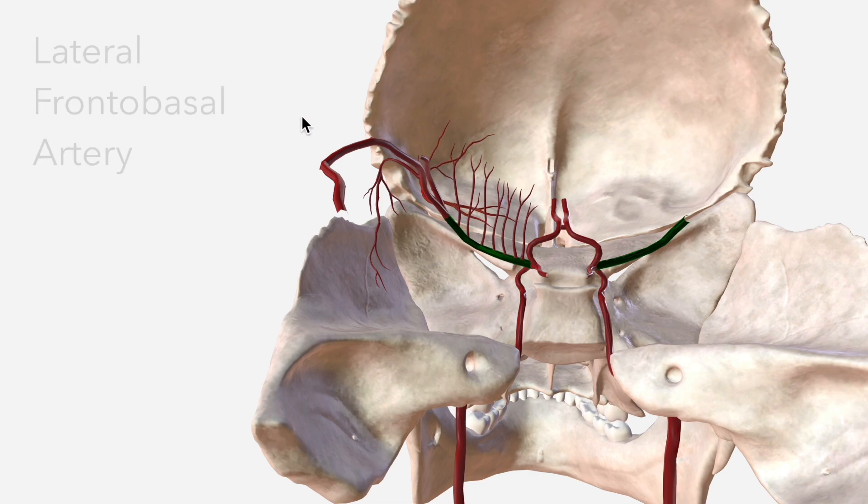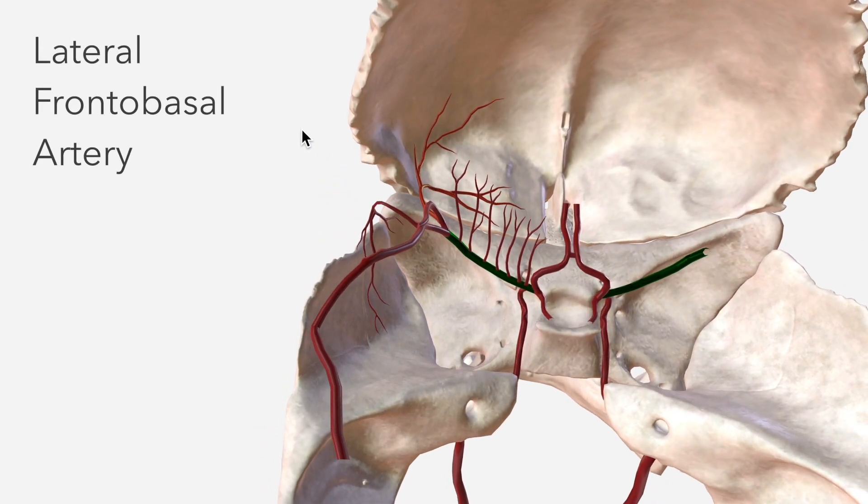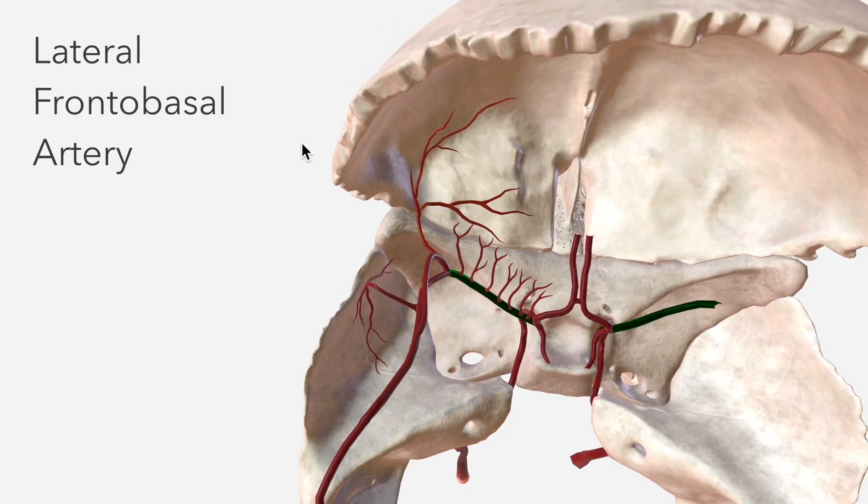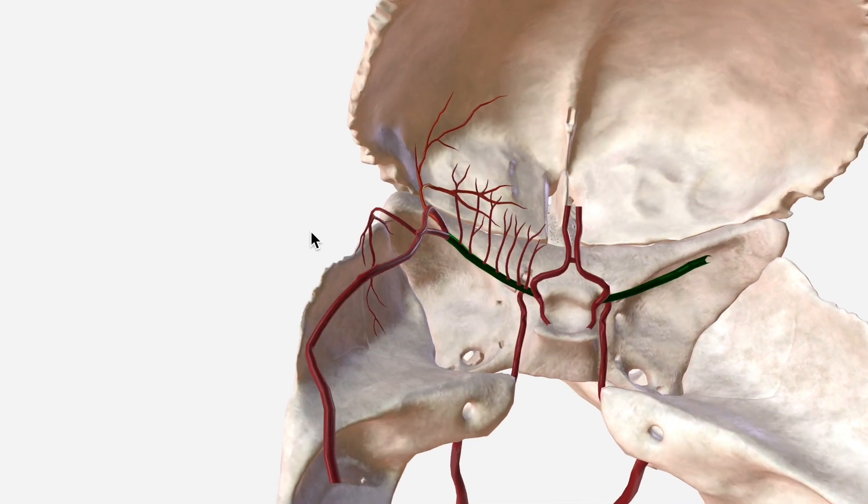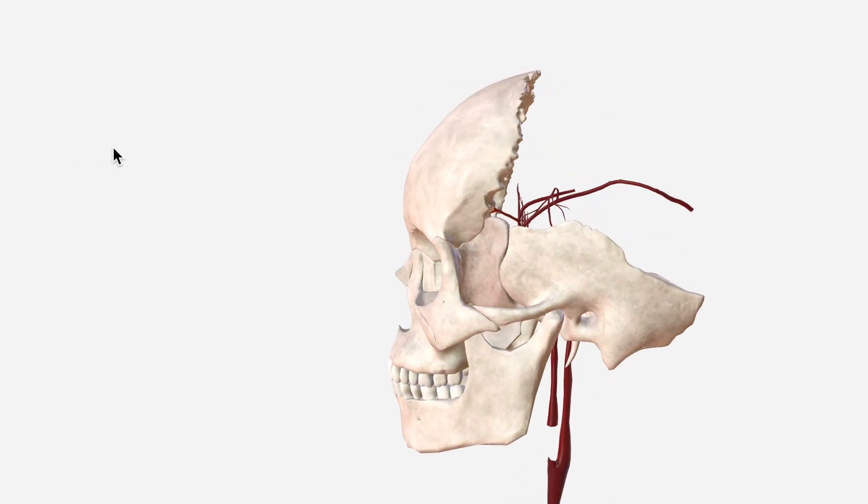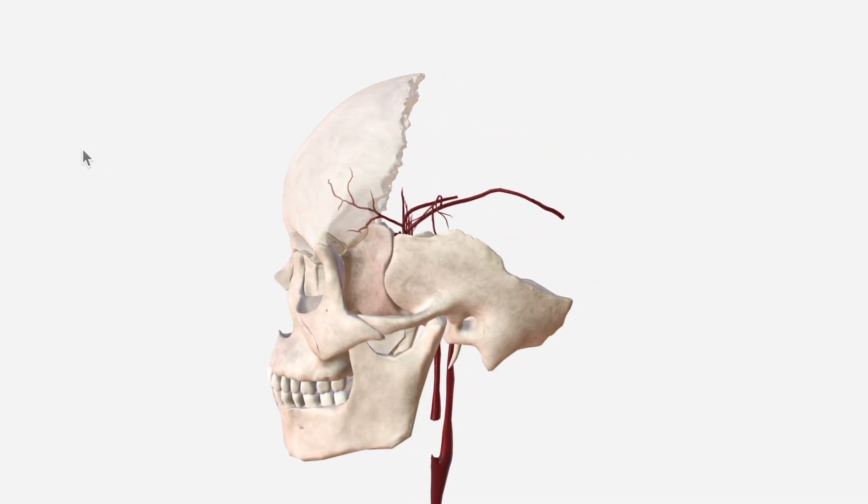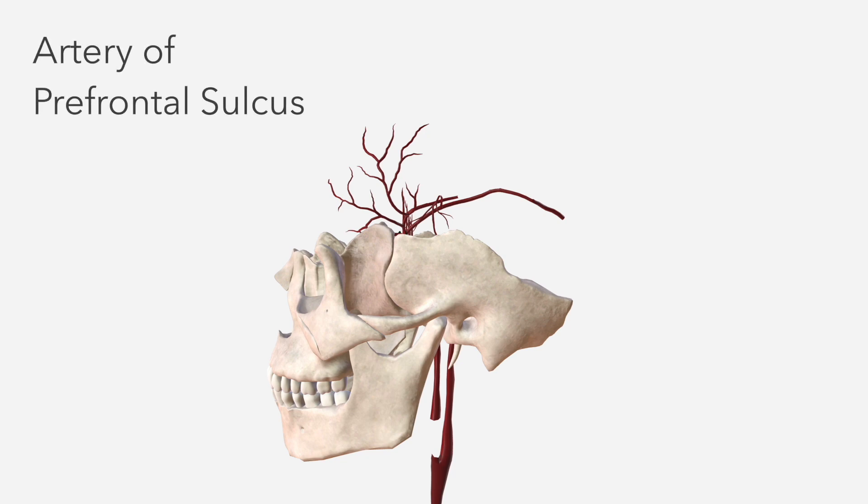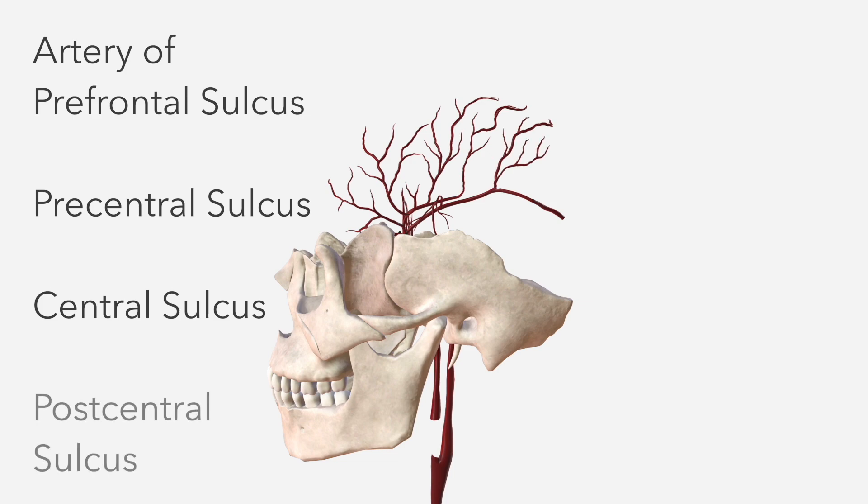Next we have the lateral frontobasal artery, which supplies the basal or the inferior aspect of the frontal lobe. We then have a number of arteries named for the sulcus in which they run. The first is the artery of the prefrontal sulcus, then the artery of the precentral sulcus, then the arteries of the central sulcus, and the arteries of the postcentral sulcus, the first of these to depart from the inferior terminal branch of the MCA.